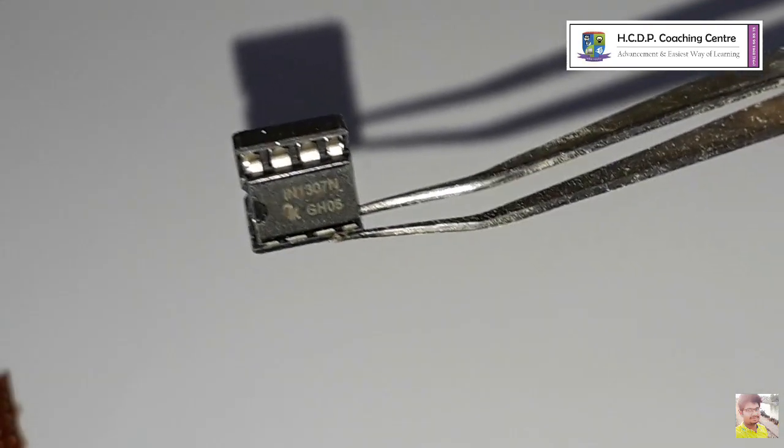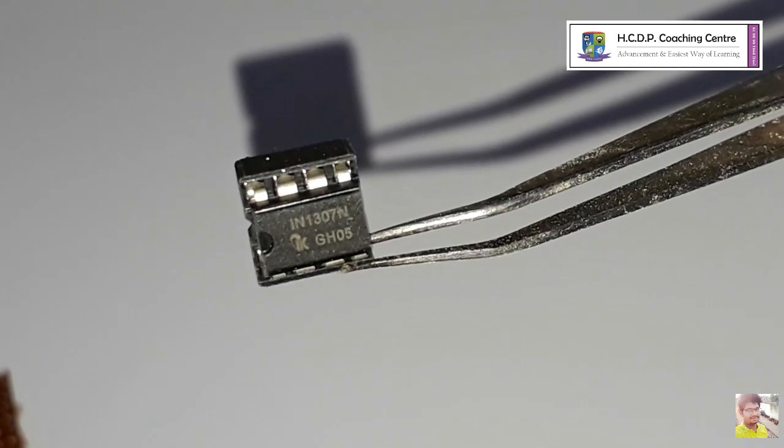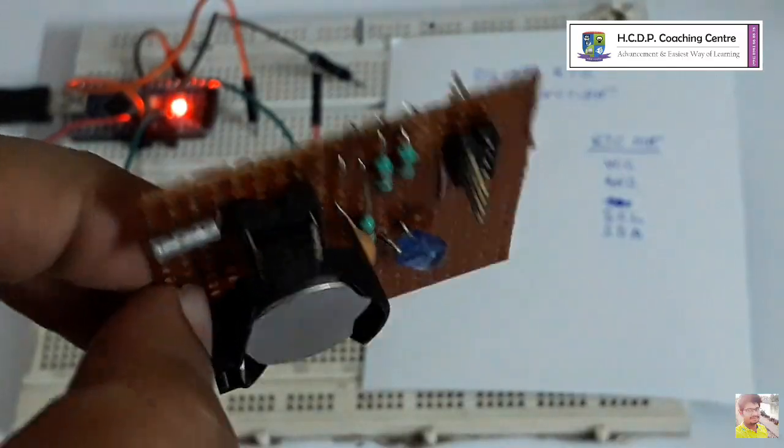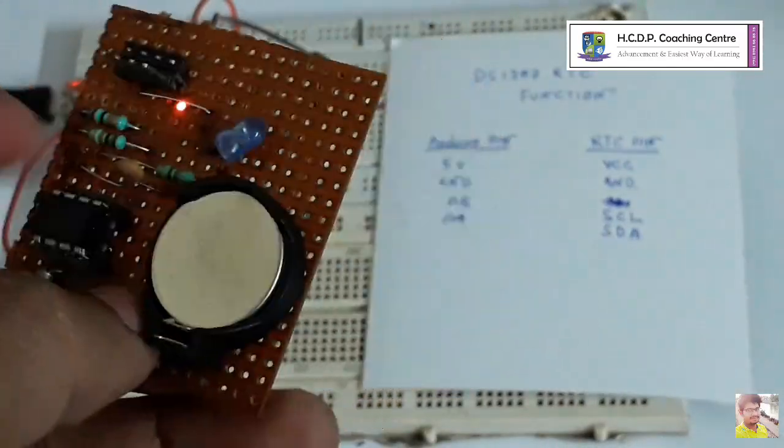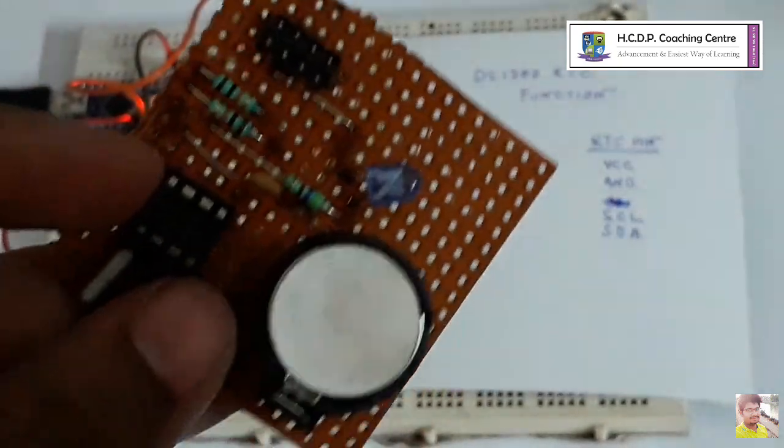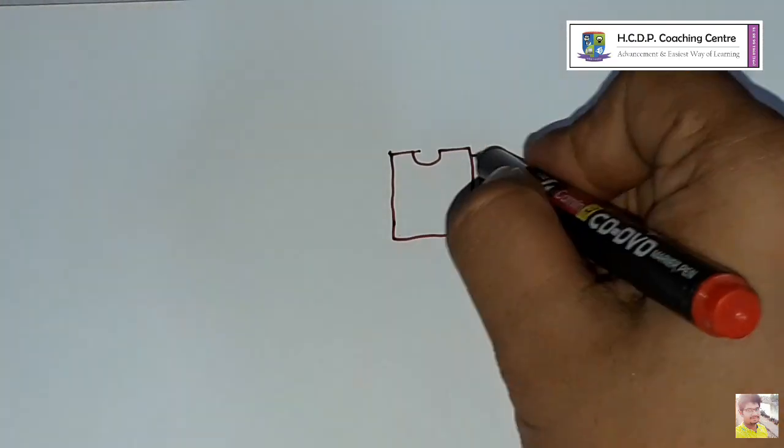In my case, I am using DS1307 IC, which is a low power full BCD clock with calendar plus 56 bytes of non-volatile static RAM. It's powered by an internal 3 volt lithium battery. So without wasting time, let's get started.